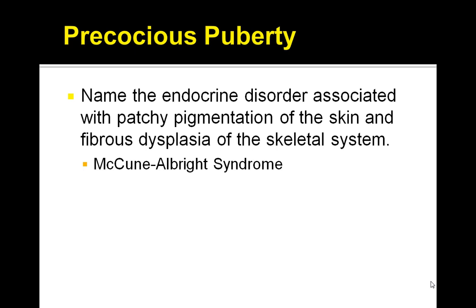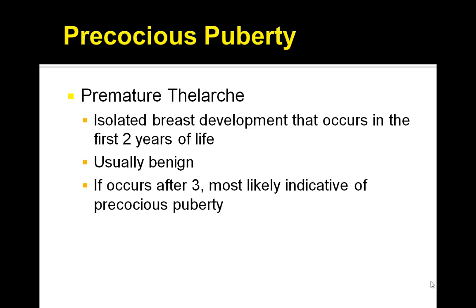Let's go through each of the algorithms for working up precocious puberty. As a patient presents with precocious puberty, you are most likely going to see signs of estrogen excess: breast development and possibly vaginal bleeding, or ovarian cysts and tumors. There are also signs of androgen excess: pubic and axillary hair, enlarged clitoris, and increased body odor — all of which suggest adrenal tumors or congenital adrenal hyperplasia.